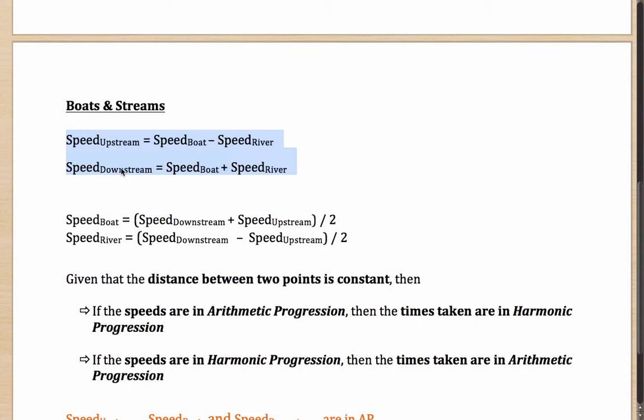What will you do if the question is the other way round? That is, you are given the upstream speed and you are given the downstream speed, and then you are asked to calculate the speed of the boat and speed of the river. You can do that. Two equations, two variables. Once you calculate...